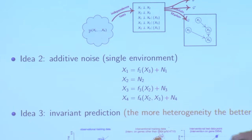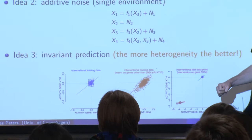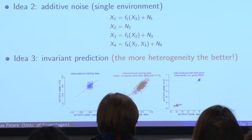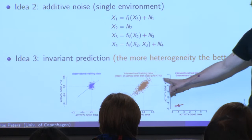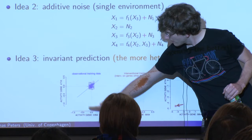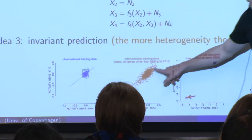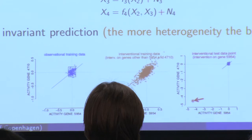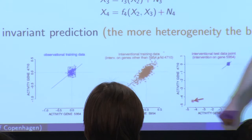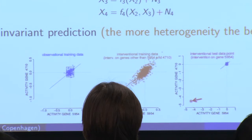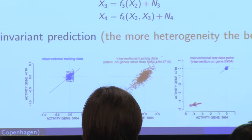The last idea that we looked at was this invariant prediction idea. Very roughly, the idea was to say these causal models are very invariant. Whenever we have these models in different settings, you can fit the same model in different environments. These orange points relate to many different interventional distributions. These causal models remain stable over many different environments, and this is something we exploited for causal inference — looking for invariant models and then relating them to the causal ones.